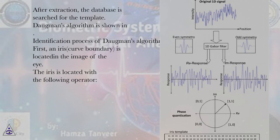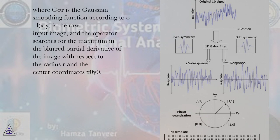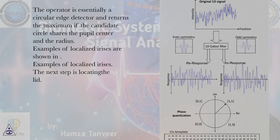Where G-Sigma-R is the Gaussian smoothing function according to Sigma, I(X, Y) is the raw input image, and the operator searches for the maximum in the blurred partial derivative of the image with respect to the radius R and the center coordinates X0, Y0. The operator is essentially a circular edge detector and returns the maximum if the candidate circle shares the pupil center and the radius.